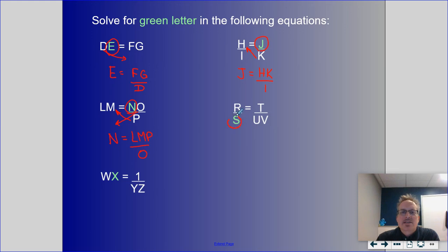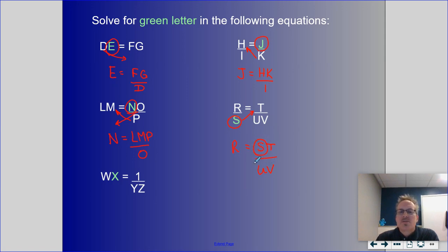Solving for S is tricky because S is in the denominator. First, bring S upstairs — that gives R equals S times T over U times V. Now isolate S: U and V are downstairs so they move upstairs, and T is upstairs so it moves downstairs. The result is S equals R times U times V over T.